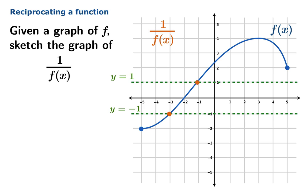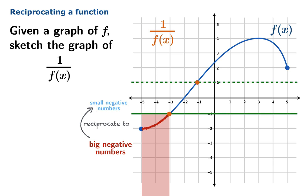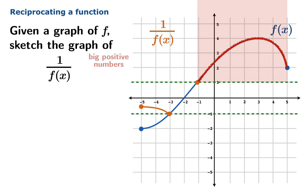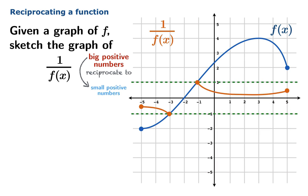Now we will analyze each of the remaining regions in terms of big and small magnitude numbers. On this part of the graph, the values of f are all big negative numbers. We know that the reciprocal of a big negative number is a small negative number, so the graph of 1/f must fit between the line y equals negative 1 and the x-axis. Similarly, where the values of f are big positive numbers, reciprocating gives small positive numbers — we flip and squish it over the line y equals 1 to get the reciprocal graph.